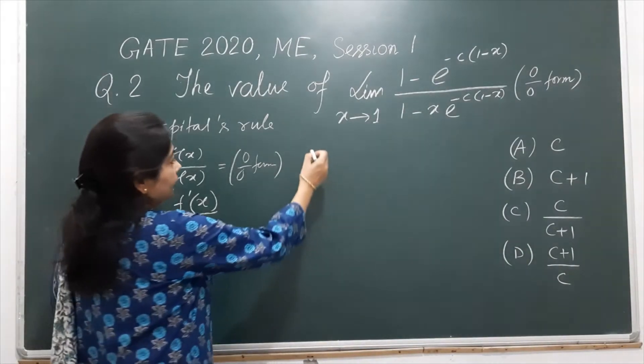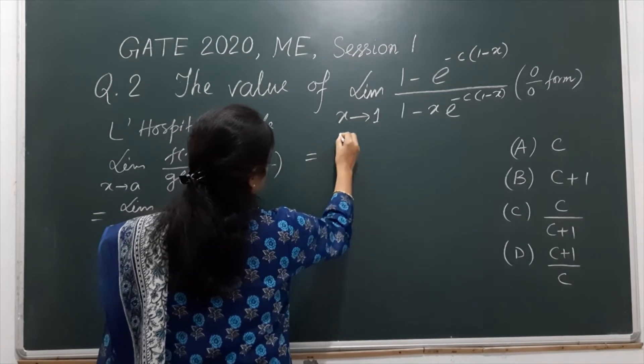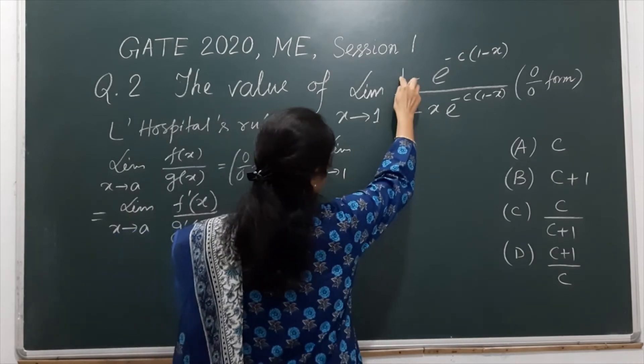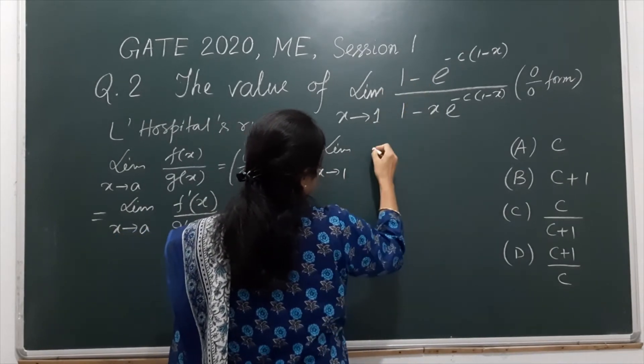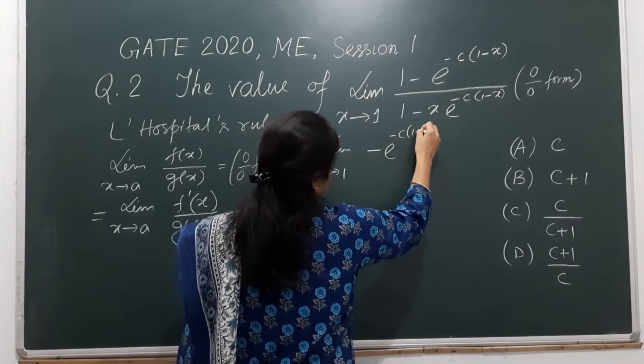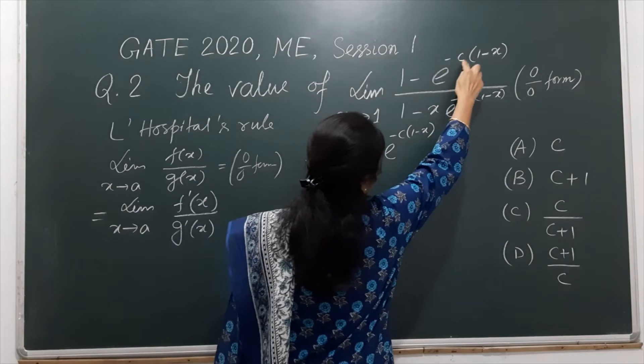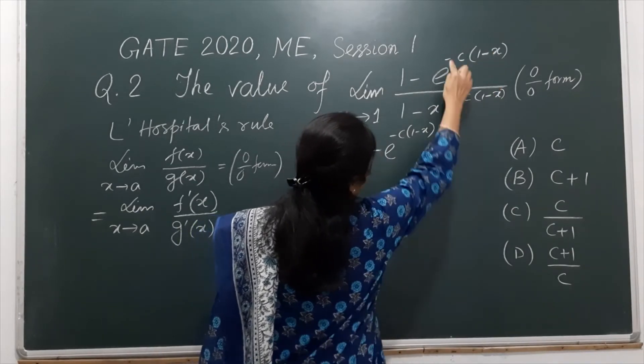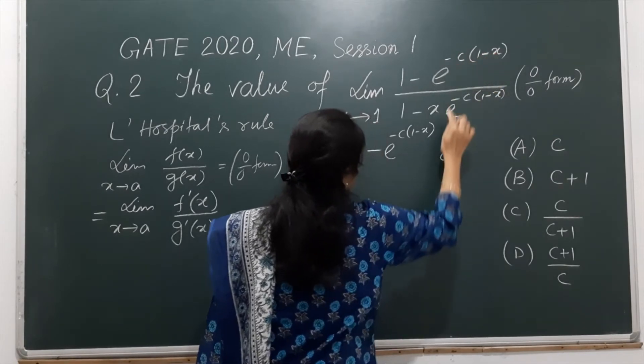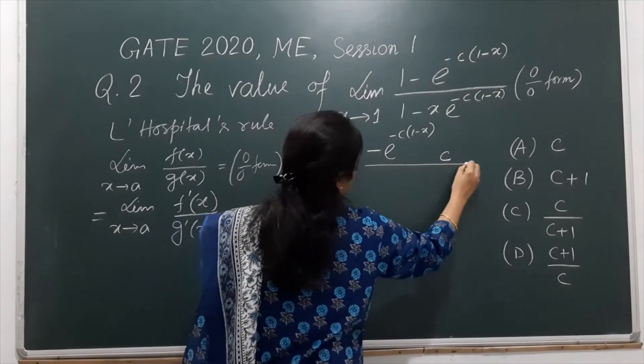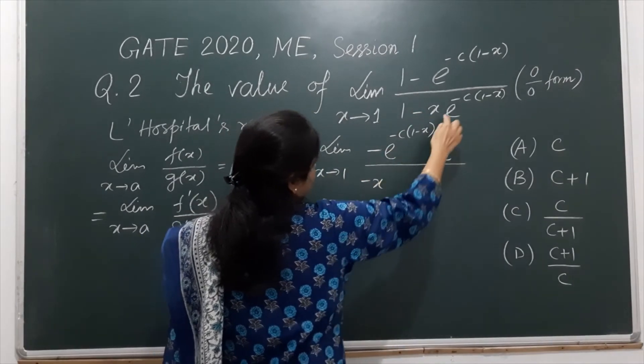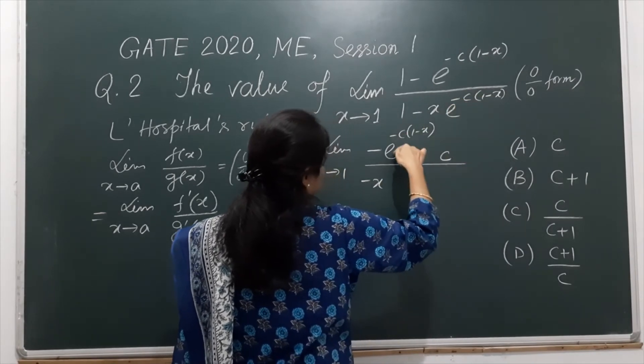So here let's see. This is equal to limit x tends to 1, then differentiation of 1 is 0 and then minus differentiation of exponential e power minus c (1 minus x) as it is, and differentiation of this term is c only because this and this minus will be plus and derivative of x is 1, c will remain as constant, divided by 1 as it is, 0, then minus differentiation of this term already we have done in the numerator.